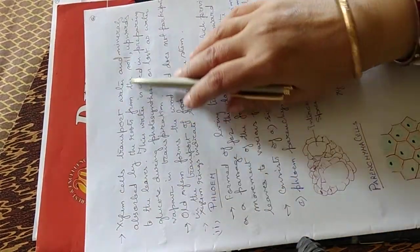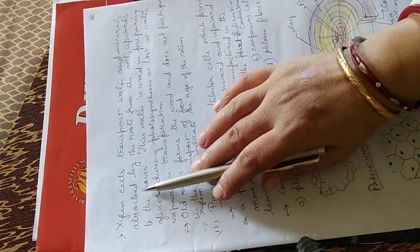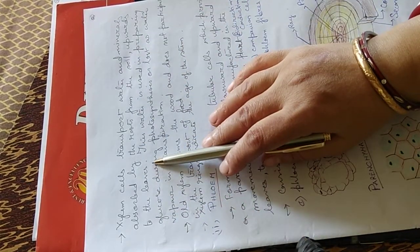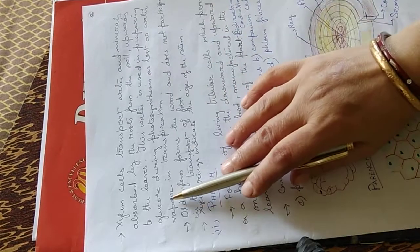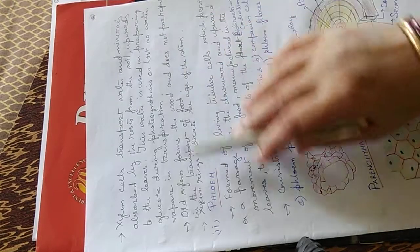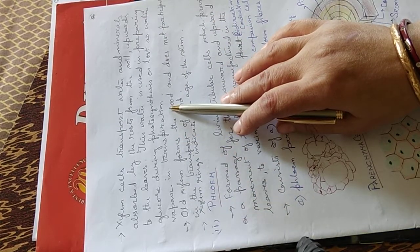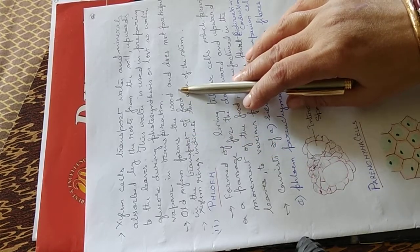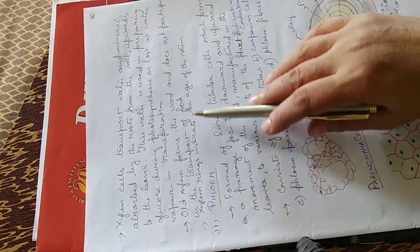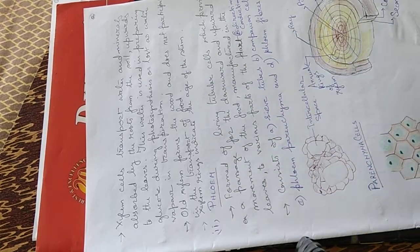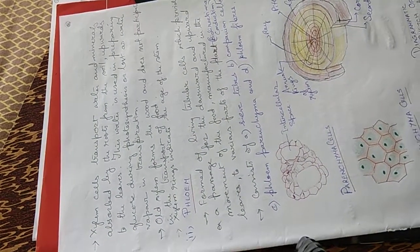Xylem cells transport water and minerals absorbed by the roots from the soil upwards to the leaves. This water is used in preparing glucose during photosynthesis or lost as water vapor in the transpiration process. Old xylem forms the wood and does not participate in the transport of the food. Xylem rings indicate the age of the stem.